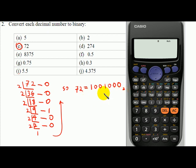First of all, we set the mode to base n. Now you have decimal number, so you key in 72 and press equal. So now I have decimal number 72.